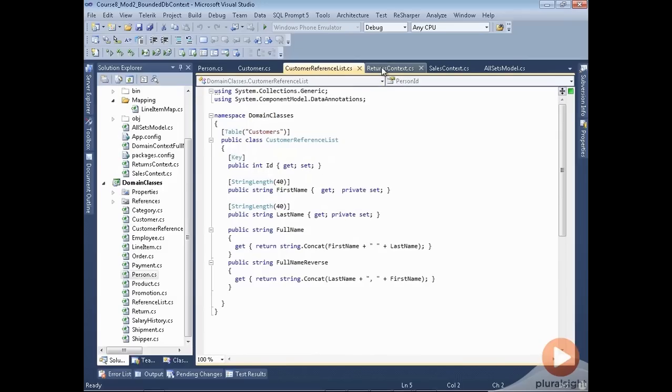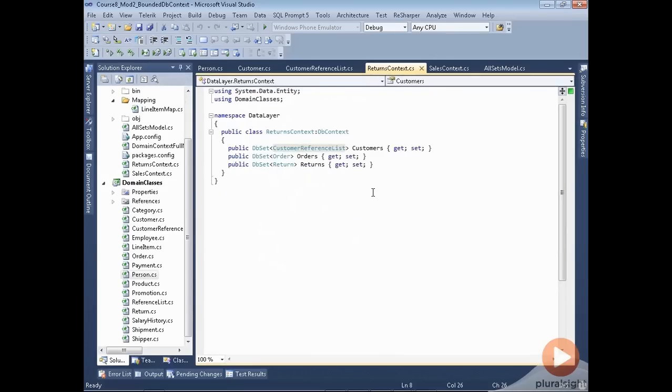So then when I'm working with a returns context, I'll work with a customer reference list. And whoever's using this code doesn't even need to know that they'll just get customers, but they'll get customers defined by the context of I'm processing return. And to me, a customer is just a person's name.